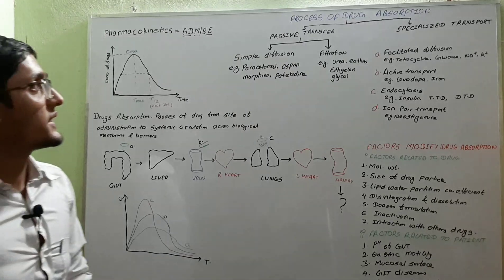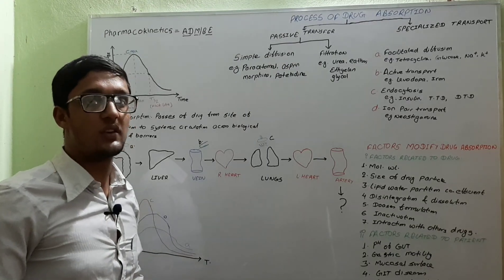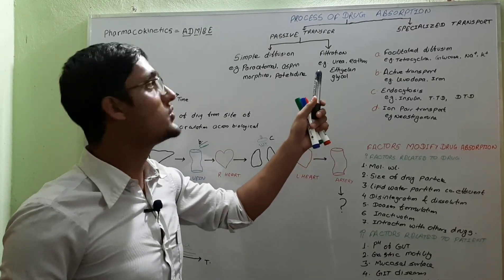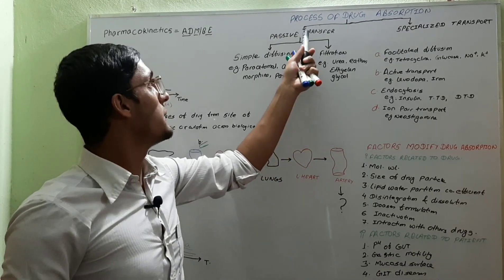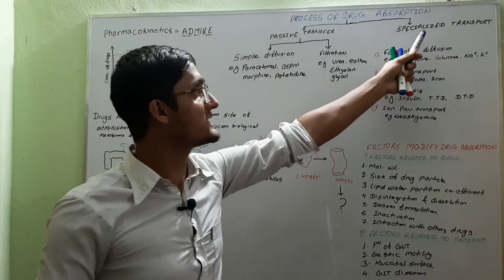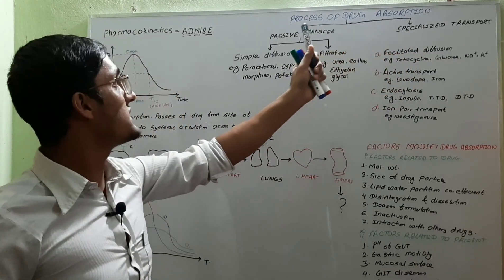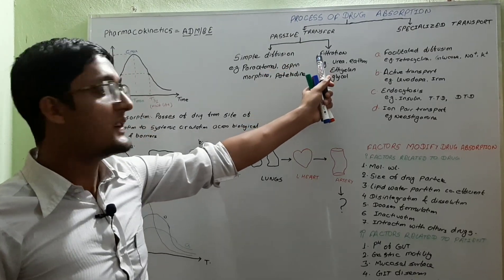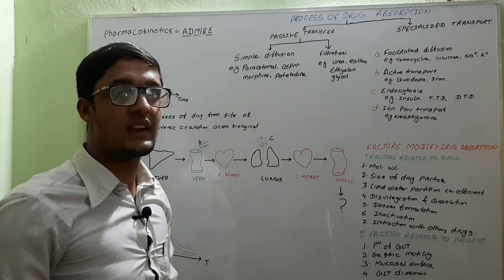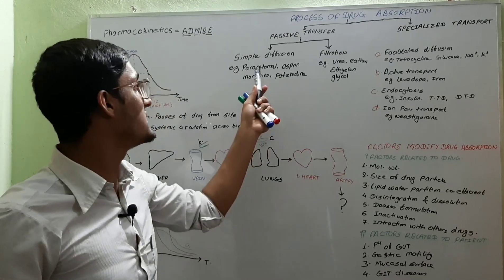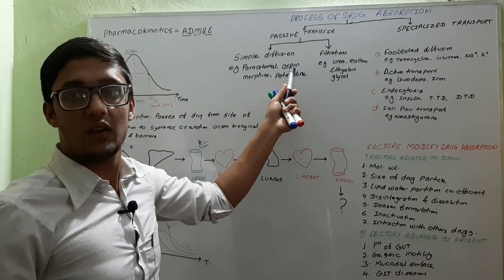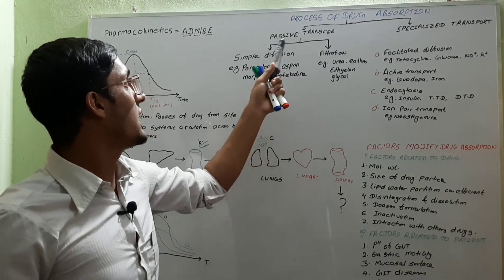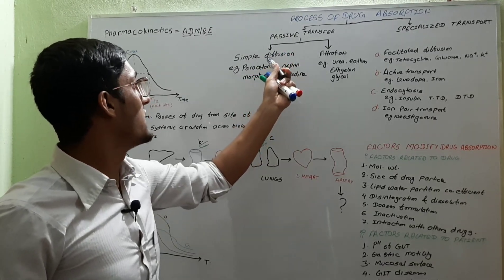There are various processes of drug absorption. They are broadly divided into two types: passive transfer and specialized transfer. Passive transfer is further divided into two types: simple diffusion and filtration. Most analgesic drugs like paracetamol, aspirin, oral morphine, pethidine, and barbiturates are absorbed through simple diffusion.